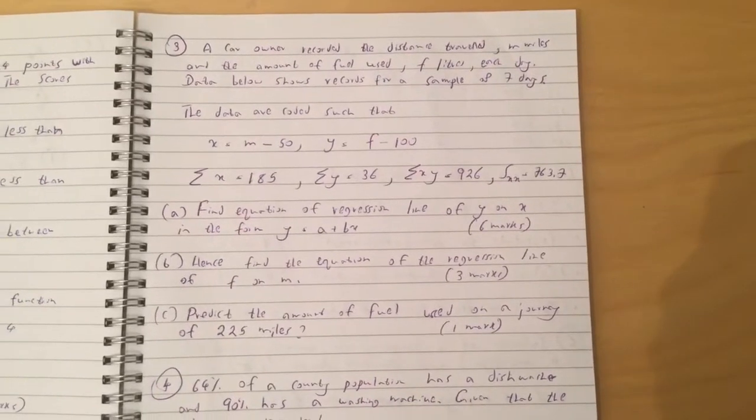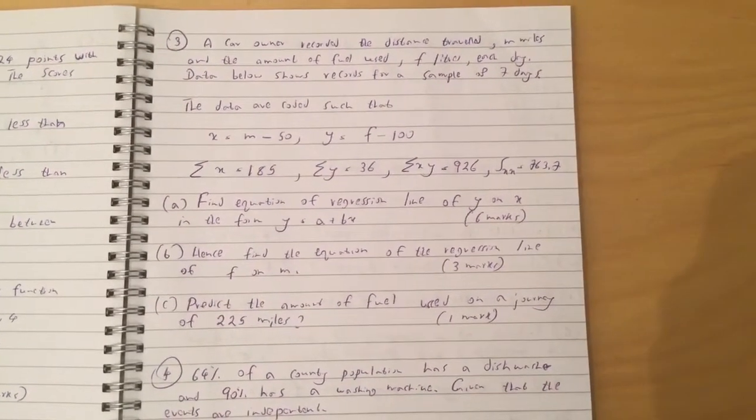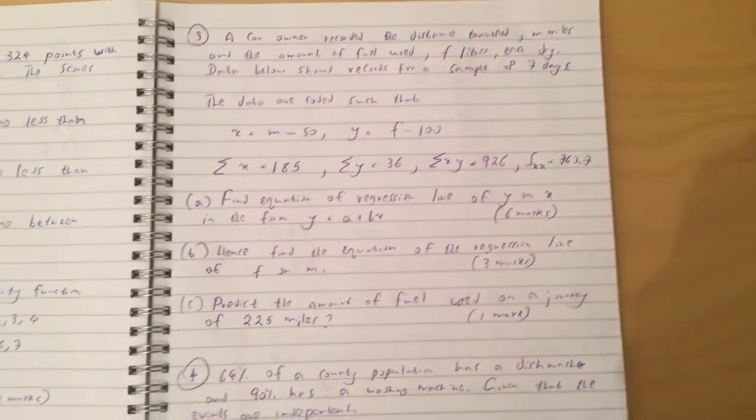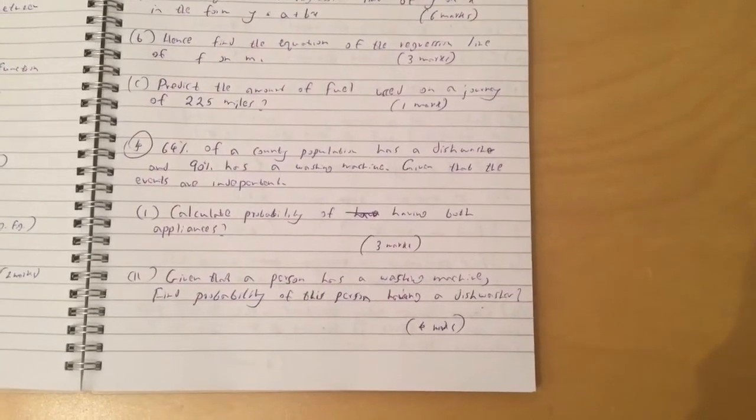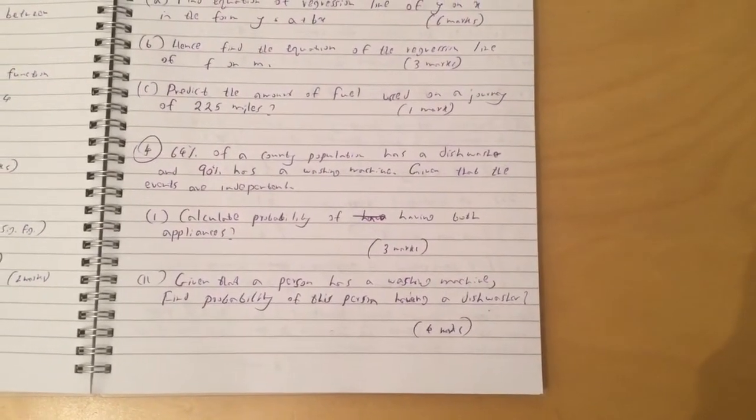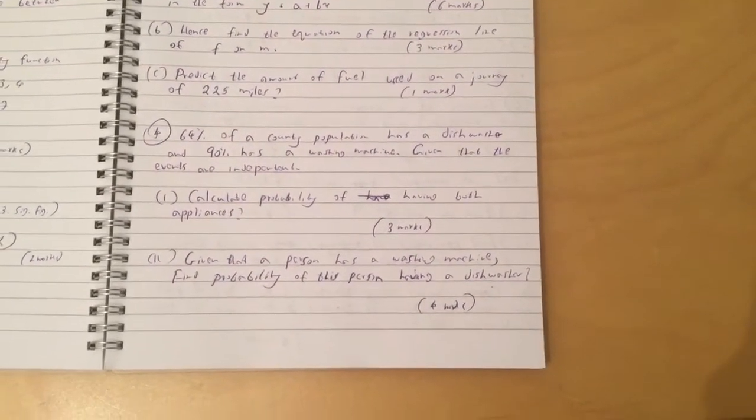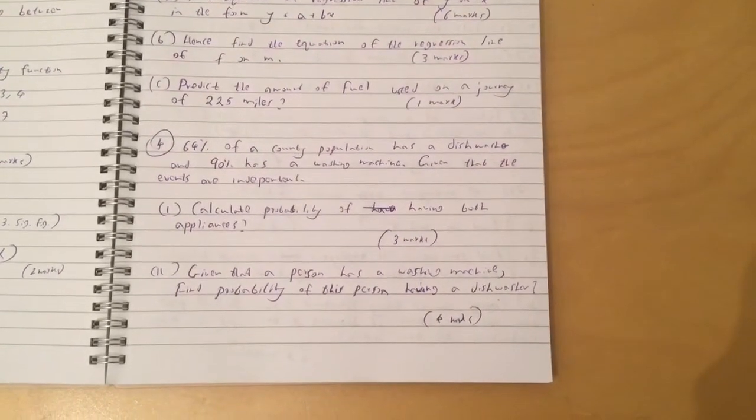C: Predict the amount of field used on a journey of 225 miles. Question 4. 64% of a county population has a dishwasher and 90% has a washing machine. Given that the events are independent, calculate the probability of having both appliances.